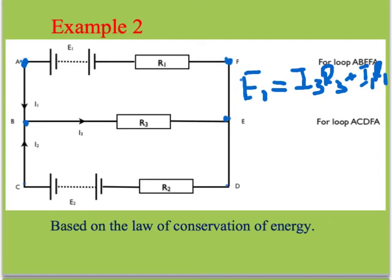So how many EMFs? Well there's actually two. There's this one and there's that one, and they're actually opposing each other. This one's trying to push this way, this one's trying to push this way. They're actually opposing. So I'm going to write E1 minus E2. That will be equal to...